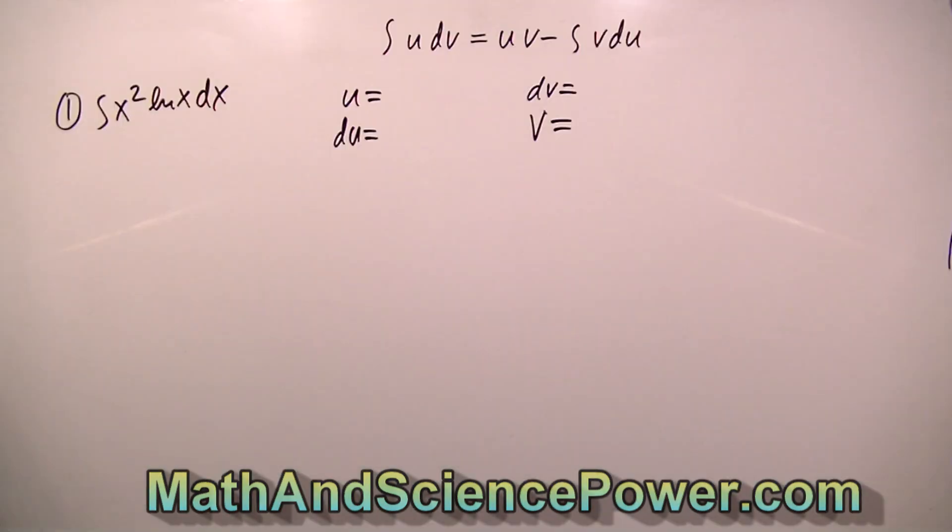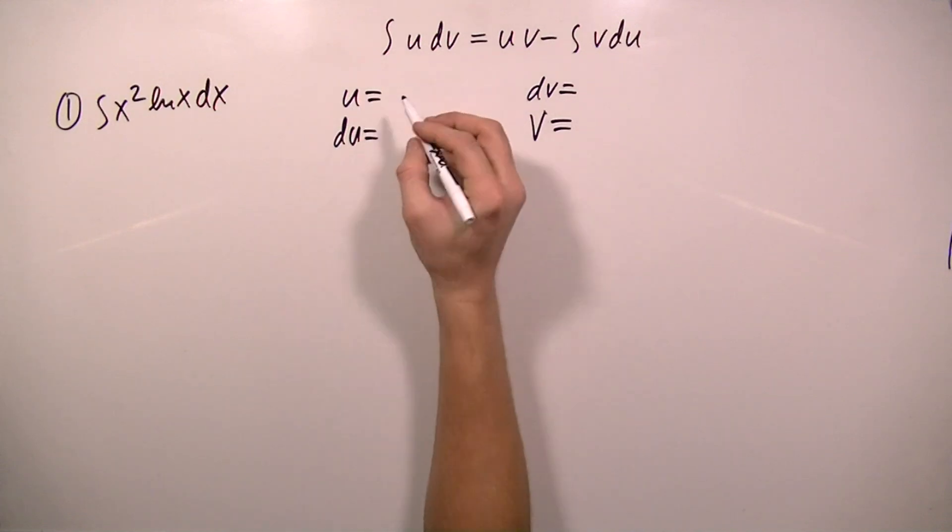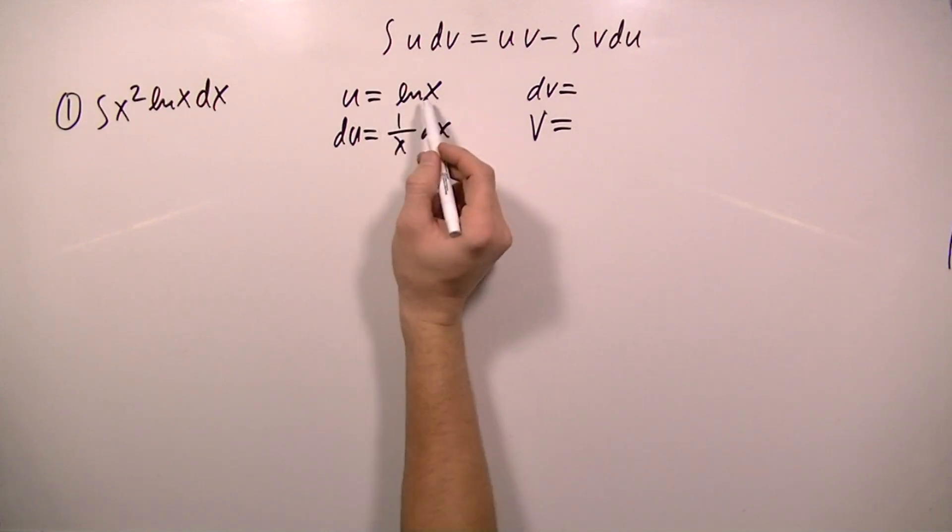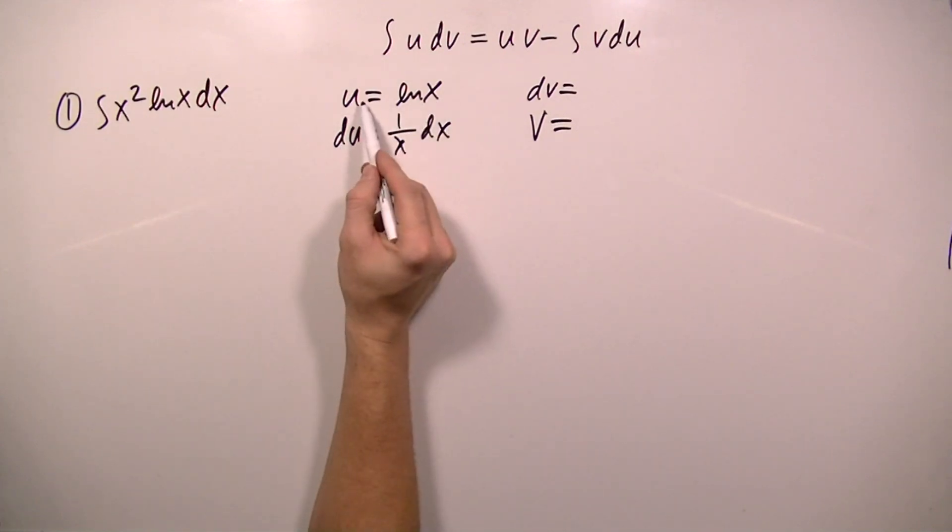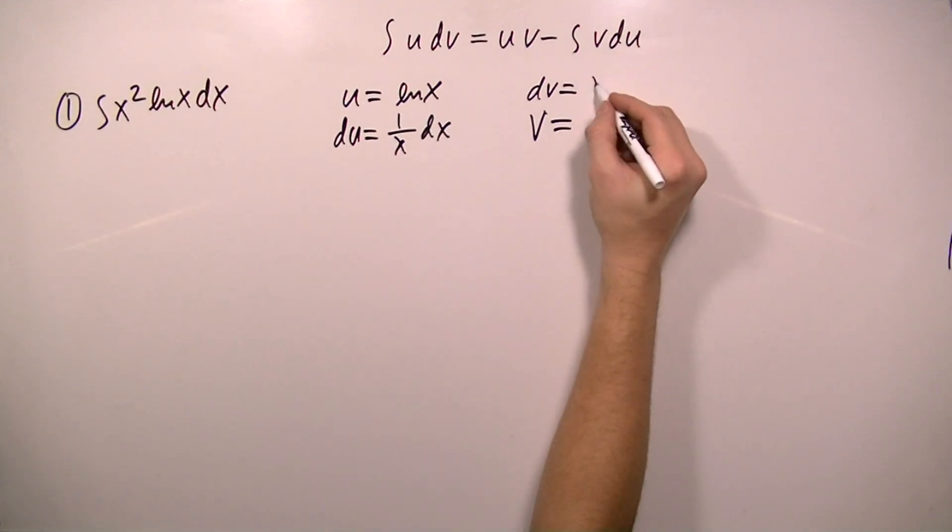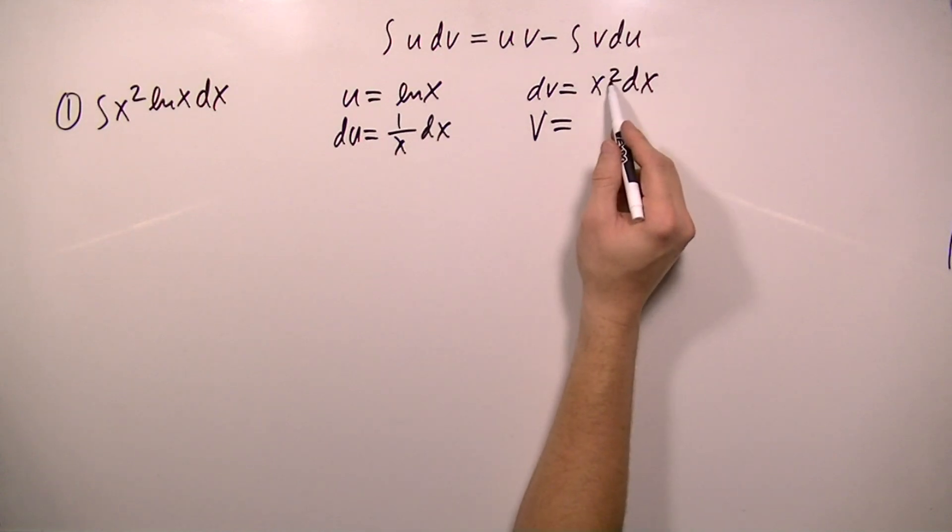Welcome back to MathAndSciencePower.com. Let's compare our answers. For u, I'm going to set u equal to ln x, so that du will be 1 over x dx. What's left is x squared dx, so dv must be x squared dx. And v is equal to the integral of x squared dx, so the integral would be x cubed over 3.